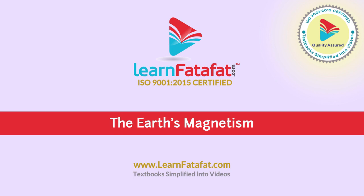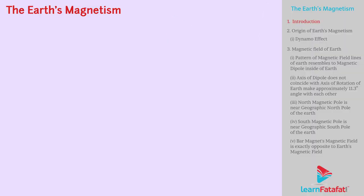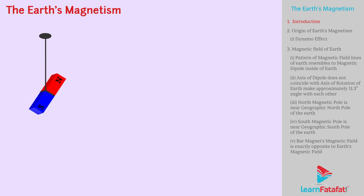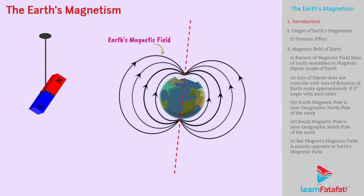The Earth's Magnetism. Dear students, if we suspend a bar magnet with a massless string, then it aligns in a specific direction. You know the reason? It is the Earth's magnetic field. The strength of the Earth's magnetic field is of the order of 10 raised to minus 5 Tesla.